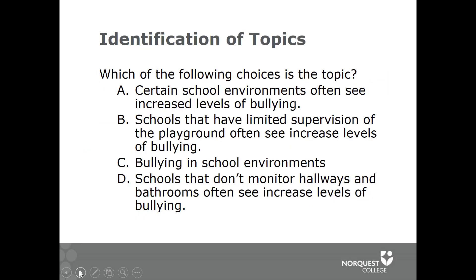Here's a question. Which of the following choices is the topic? Is it A: 'Certain school environments often see increased levels of bullying'? Is it B: 'Schools that have limited supervision of the playground often see increased levels of bullying'? Is it C: 'Bullying in school environments'? Or is it D: 'Schools that don't monitor hallways and bathrooms often see increased levels of bullying'? Your answer should be C. It's the shortest — so that's one clue — and it's not a complete sentence, that's another clue to identify it as a topic.